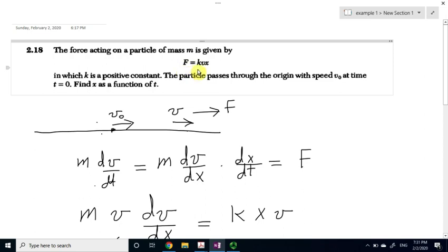The force acting on a particle of mass m is given by the following equation. The force is equal to k, which is a positive constant, times v, that's the velocity, times x, that's the position.